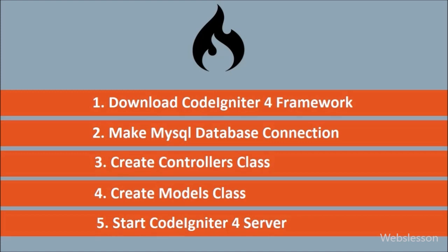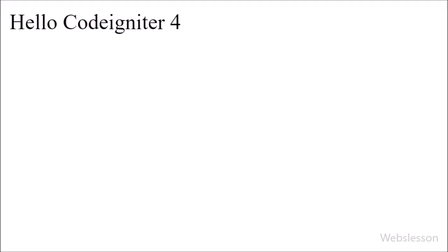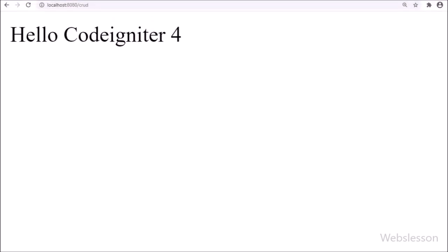So in this part, we have seen how to download CodeIgniter 4 Framework with the required prerequisites, then how to make the database connection, create the models class and controller class, and how to start the CodeIgniter 4 server to view the application in a browser. In the next part, we will start the CRUD application and see how to fetch data from a MySQL database and display it on a web page in table format with pagination links. If you have any query regarding this tutorial, you can ask in the comment box. If you liked this video, please share it with your friends or on social media, and don't forget to subscribe to our channel for future video tutorials.